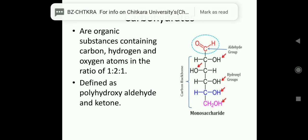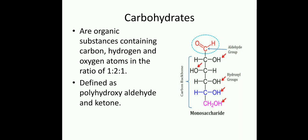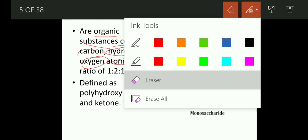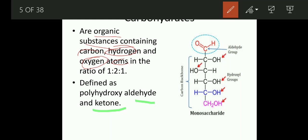Now we start our chapter on carbohydrates. Carbohydrates are organic substances containing carbon, hydrogen, and oxygen atoms in the ratio 1:2:1. Carbohydrates are also defined as polyhydroxy aldehyde and ketone. In the diagram, this is the aldehyde group and this is the hydroxyl group — OH is the hydroxyl group and CHO is the aldehyde group. Clear, students?